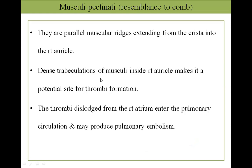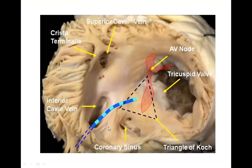The musculi pectinati resemble a comb. They are small parallel muscular ridges extending from the crista terminalis into the right auricle. Dense trabeculations of the musculi pectinati inside the right auricle make it a potential site for thrombus formation. Thrombi dislodged from the right atrium enter the pulmonary circulation and may produce pulmonary embolism.